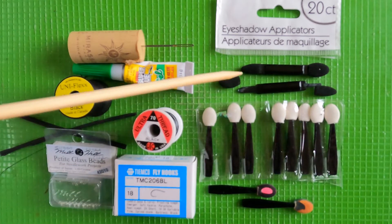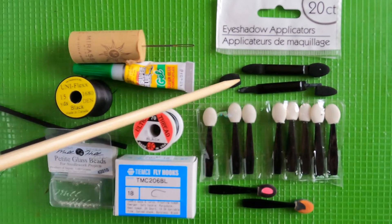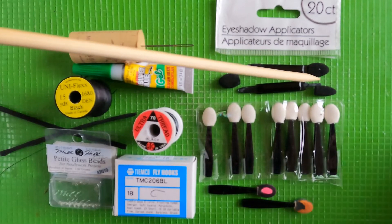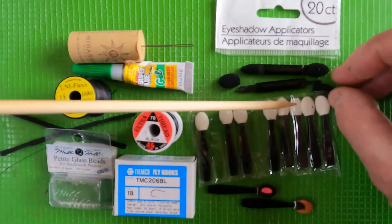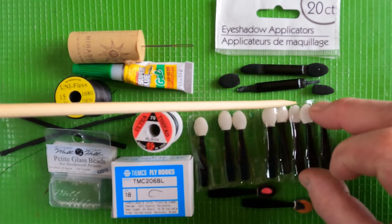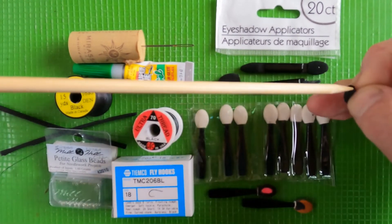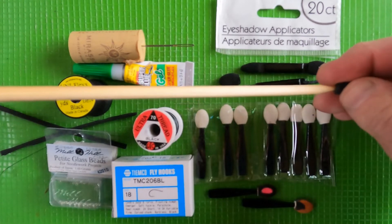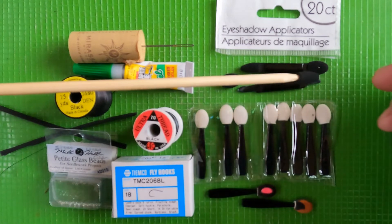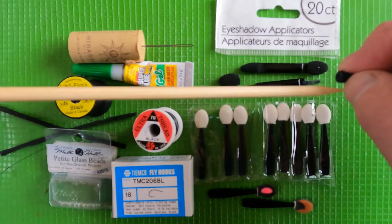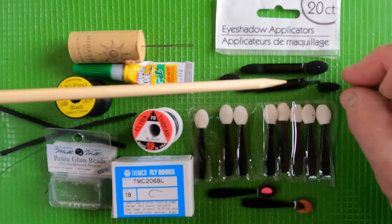The black ones make a very nice beetle imitation. These come on little plastic sticks and you simply slide off these foam bits. They're hollow and you can slide them up over the hook. I glue them in place by injecting glue inside and gluing them in place.